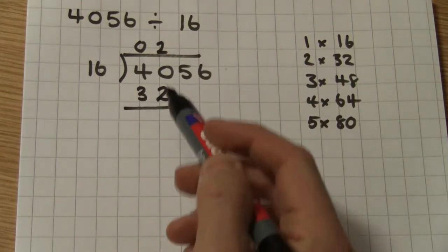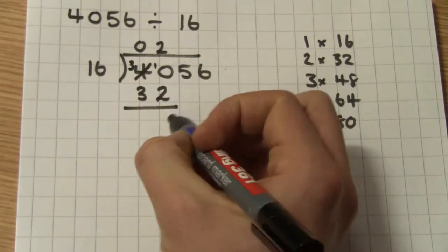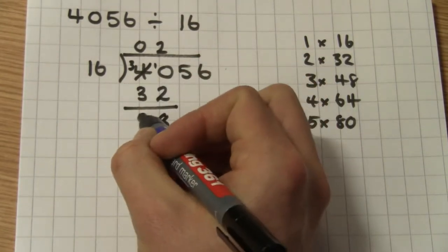So now, as before, we can subtract. Zero take away two, can't do. Steal from the four. Ten take away two is eight. Three take away three is zero.